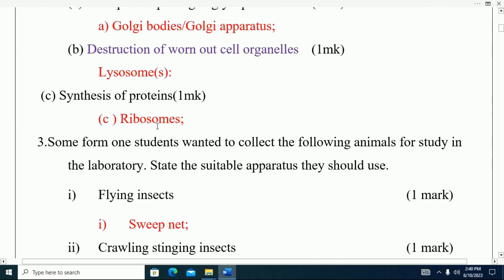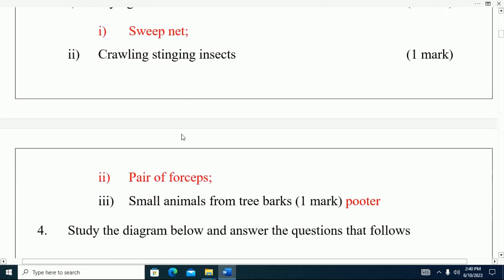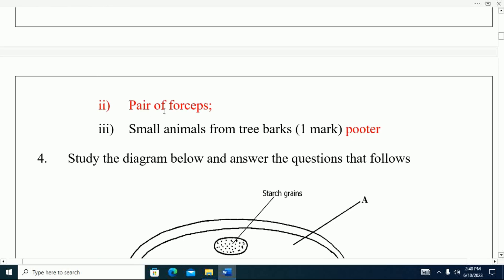Question number three: Some Form 1 students wanted to collect the following animals for study in the laboratory. State the suitable apparatus they should use to catch the following animals. A: fly/insects - the appropriate or suitable apparatus that one is sweep net. If they wanted to collect stinging insects, the best apparatus is a pair of forceps.